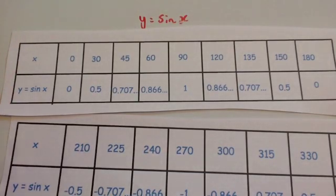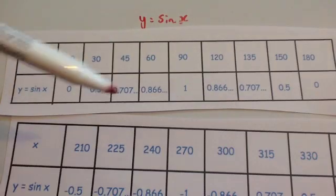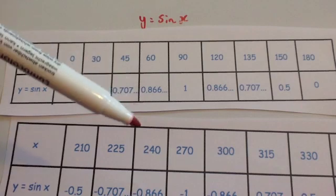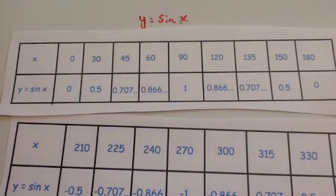So whenever you draw that graph and plot it, plot it on your set of axes going across from 0, all the way up to 360. Draw your y-axis going from 1 to minus 1, and plot those points and see what you get. So pause the video now and do that and see what happens.